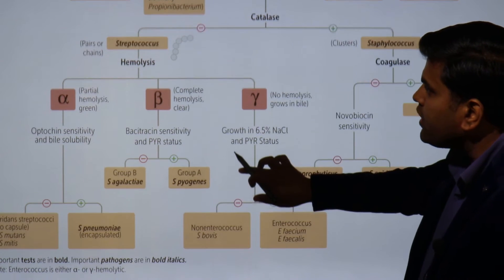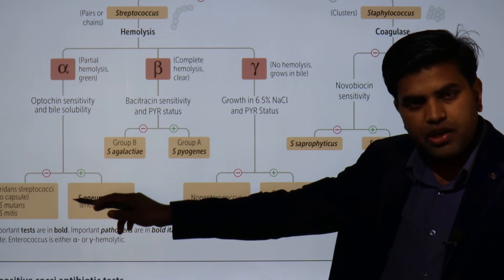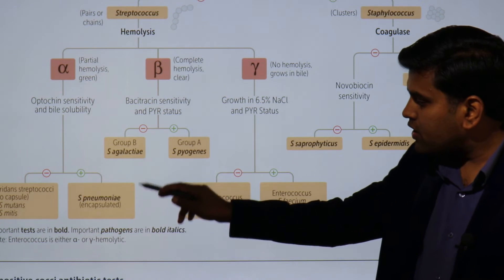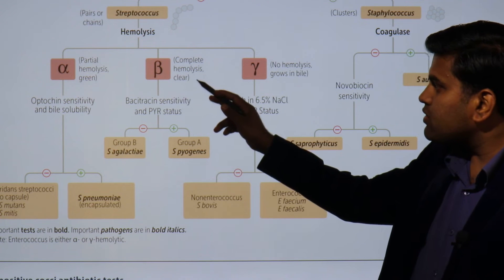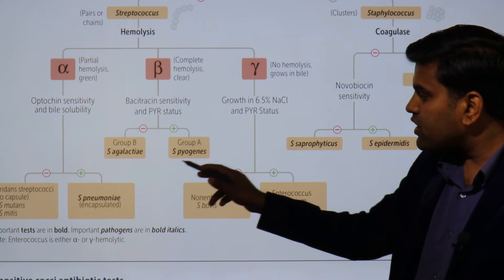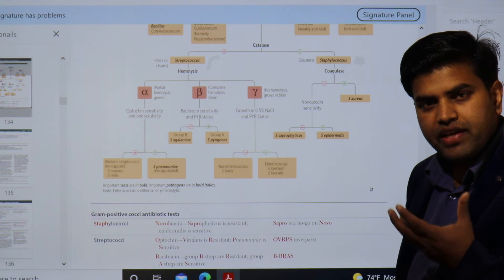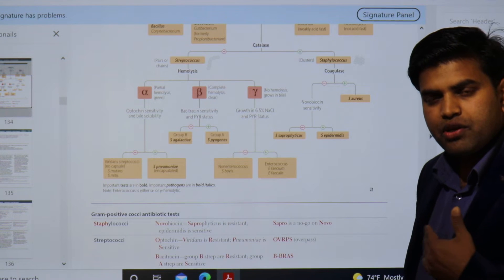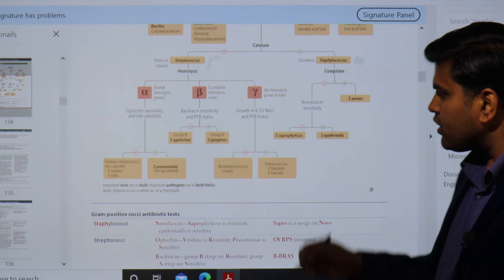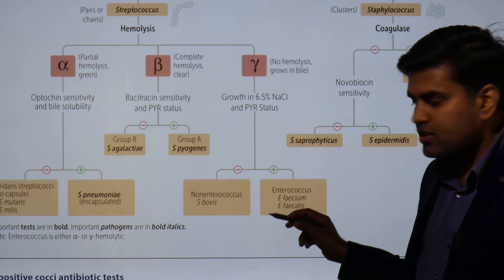In the Streptococcus group there are different organisms like Streptococcus pneumoniae, Streptococcus viridans groups responsible for infective endocarditis (including mitis, mutans, sanguinis, and salivarius). Streptococcus pneumoniae causes pneumonia. Then there is the beta-hemolytic group: Streptococcus agalactiae and Streptococcus pyogenes. Streptococcus pyogenes causes pharyngitis, which in two to three weeks can lead people to develop rheumatic fever or post-streptococcal glomerulonephritis.